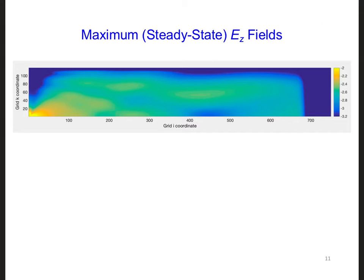And here are the maximum EZ fields after steady state is achieved. This is about what we might expect. The fields are strongest near the transmitter. The fields decay to zero as we approach the reflection height of the ionosphere.